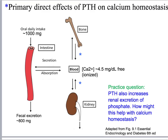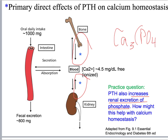Parathyroid hormone has its largest direct effect on serum calcium levels by increasing the rate at which bones are resorbed and calcium is released into the blood, and by increasing the rate at which the kidney reabsorbs calcium from urine. PTH also affects the kidney by increasing renal excretion of phosphate, which helps calcium homeostasis because calcium and phosphate can form a salt in the serum that decreases the concentration of free ionized calcium.